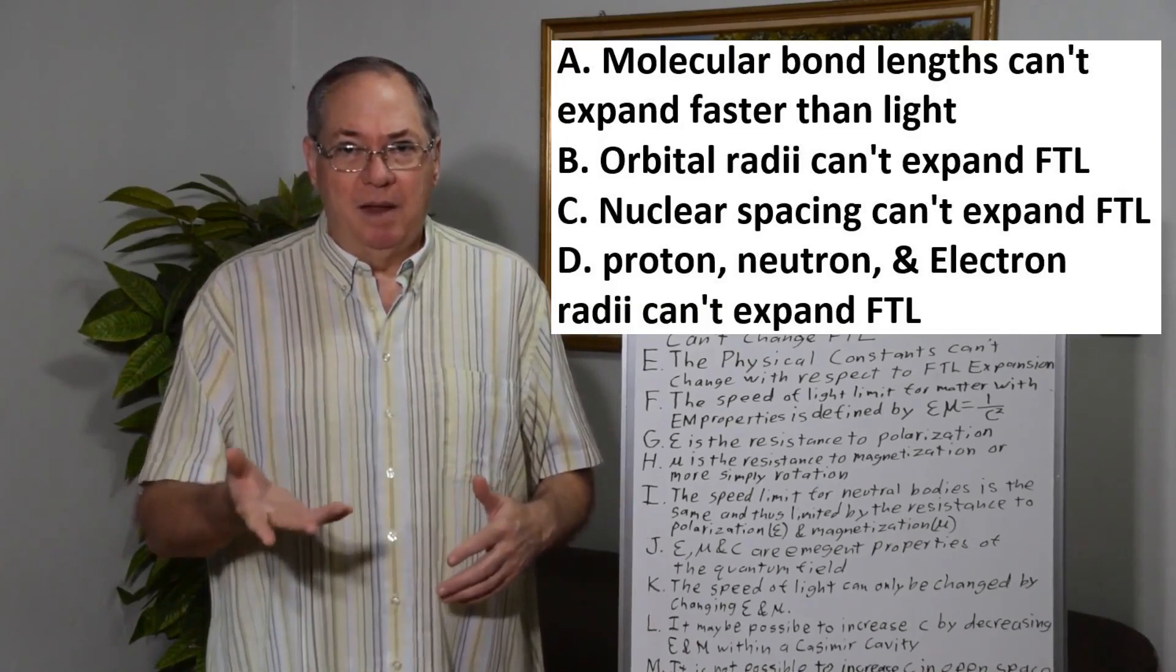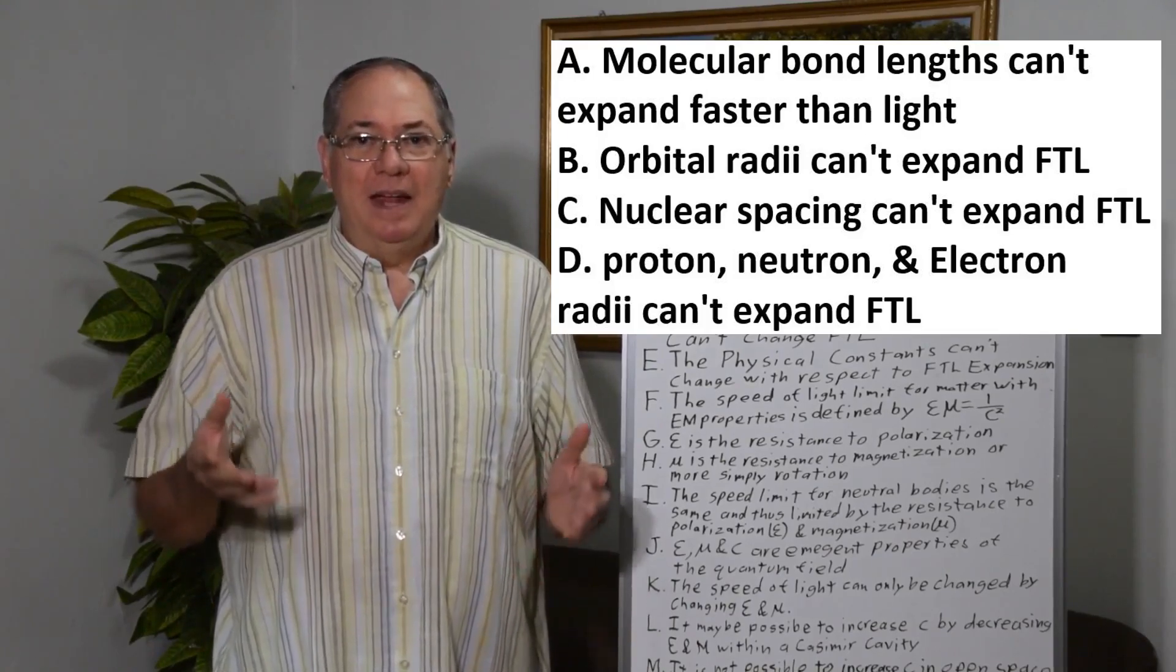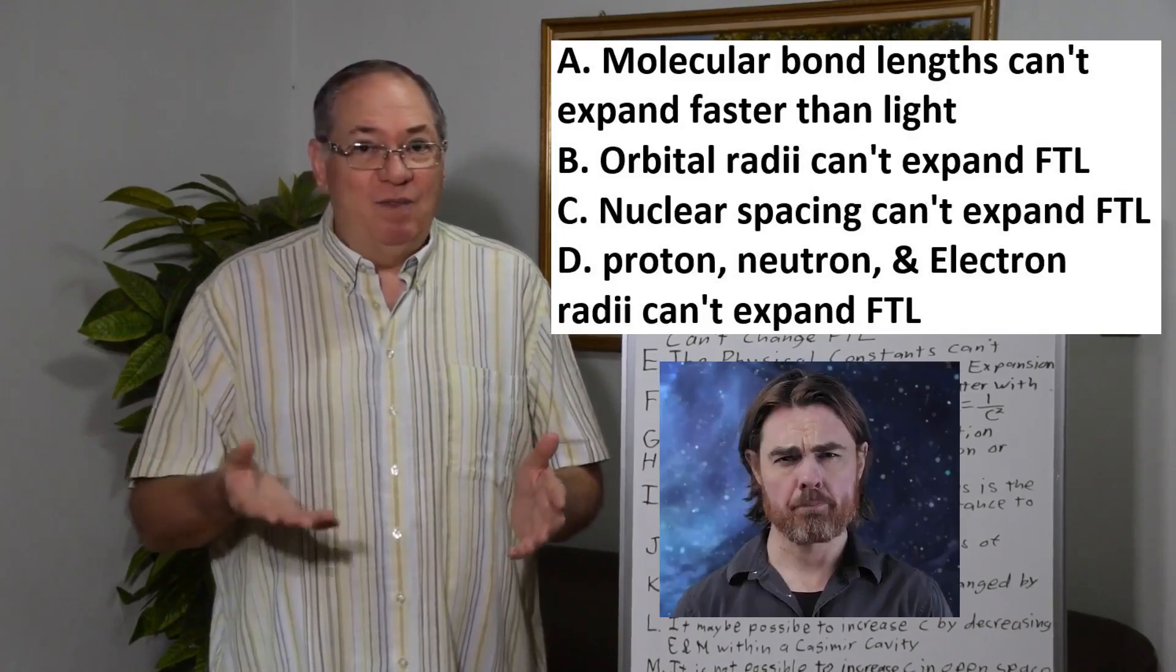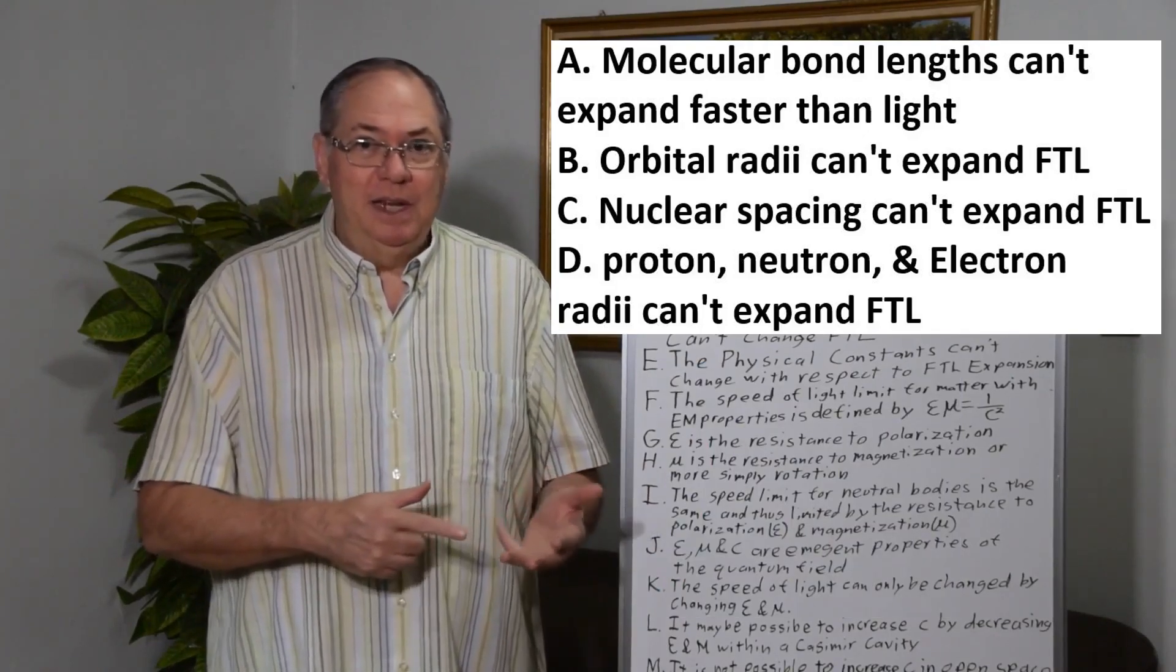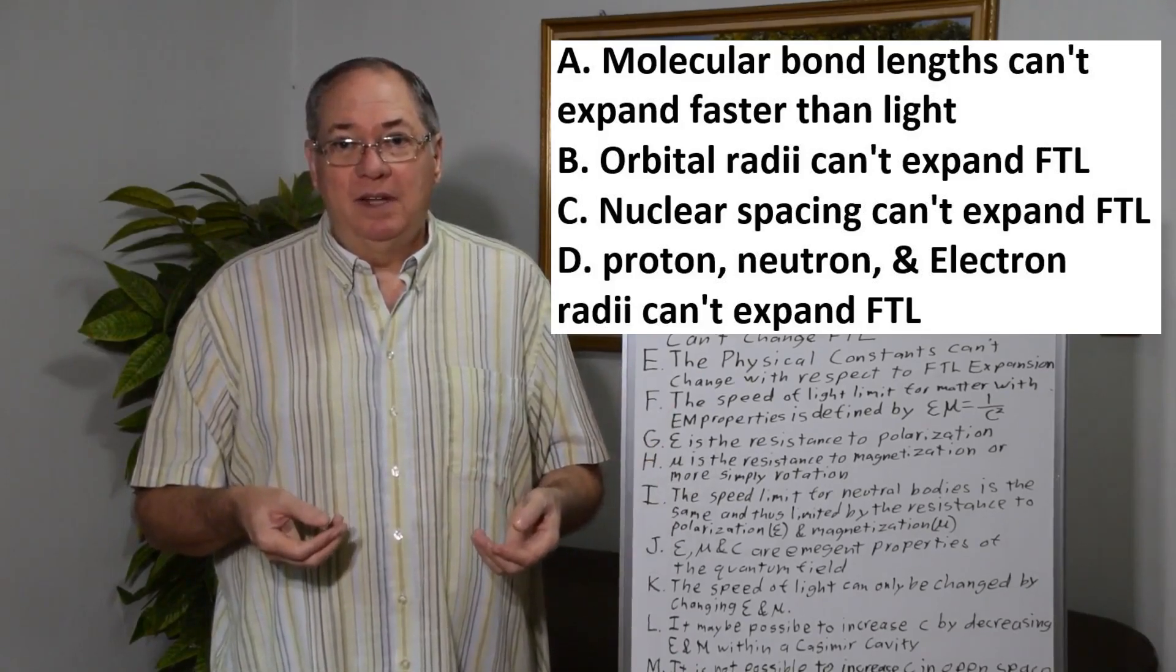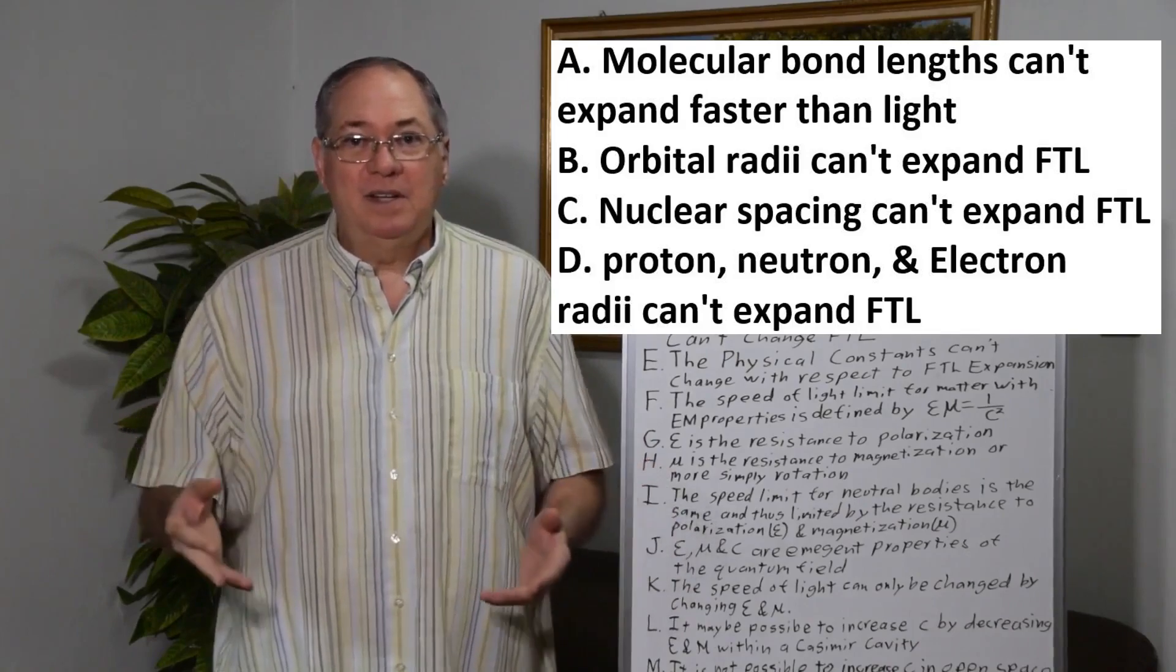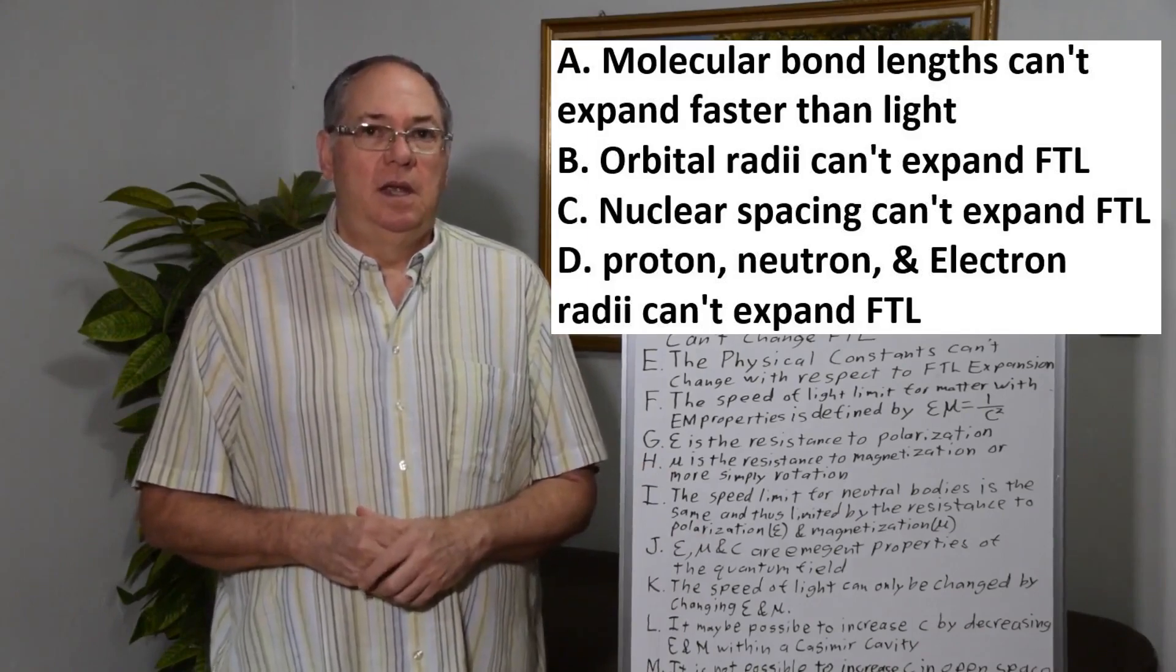Protons, neutrons, and electrons, their radii don't expand faster than light. And when I talk about electron radii, I mean the Compton radius. None of these things can happen. And space between the galaxies, which Matt said could expand, is filled with dust, gas, plasma mostly, and just particles—protons and electrons and neutrons floating in space.